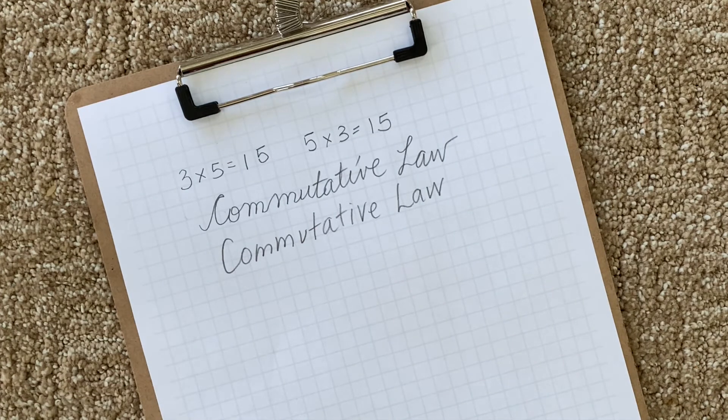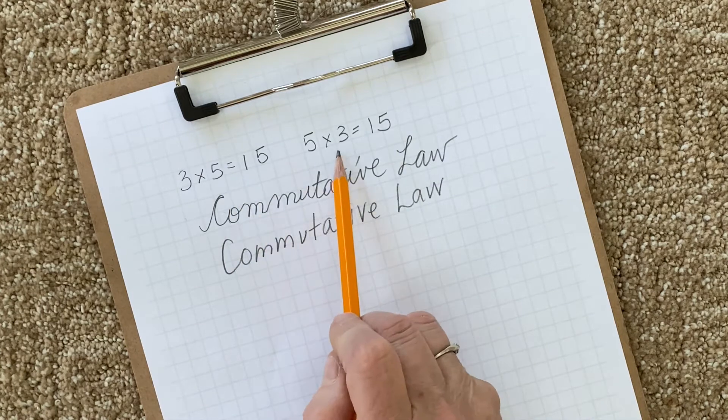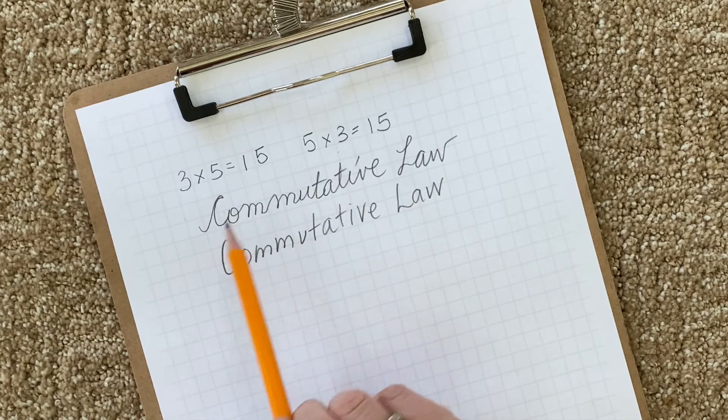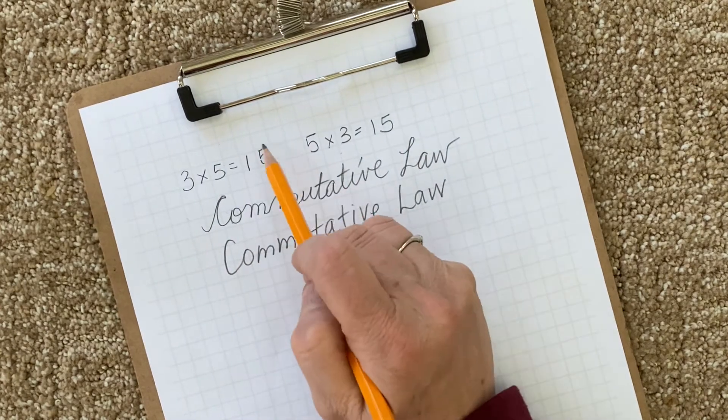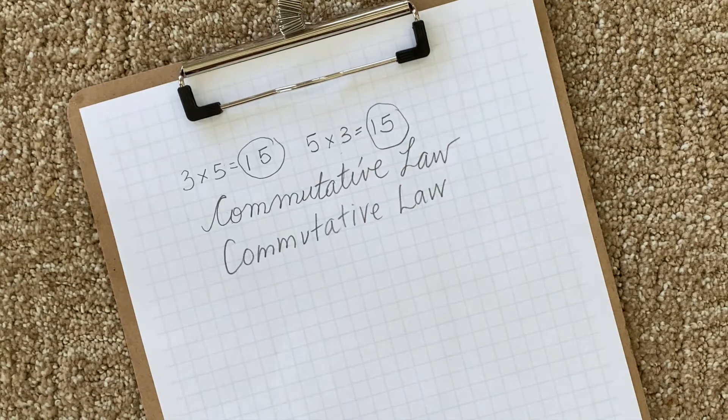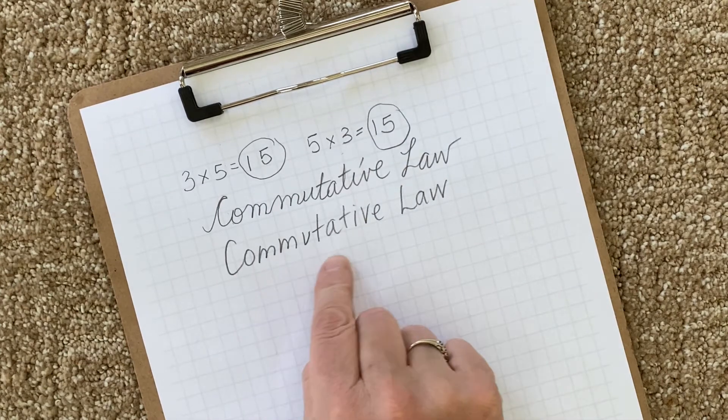I think a law should be written in a large font, don't you? You can see by these two problems, your multiplicand and your multiplier are reversed. But again, we still see the product is still the same. And we call it commutative law.